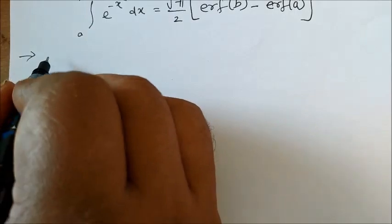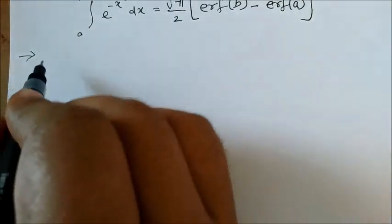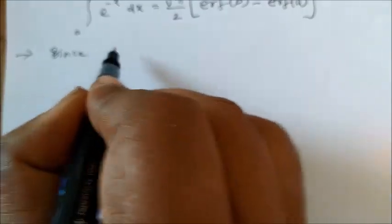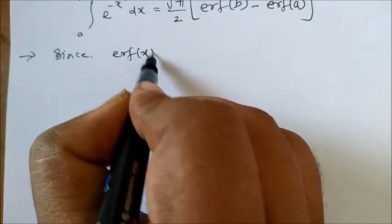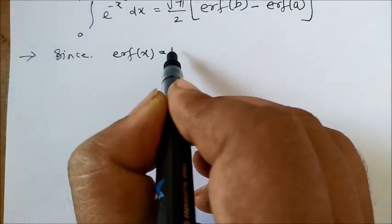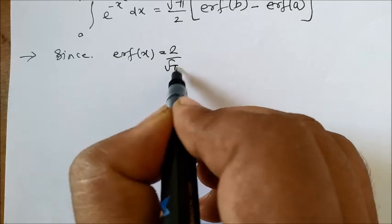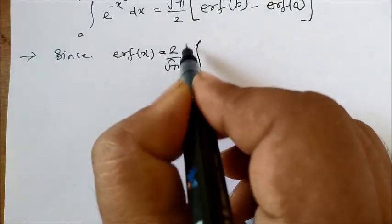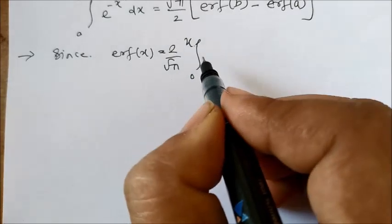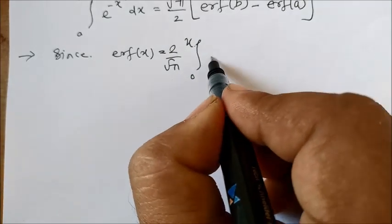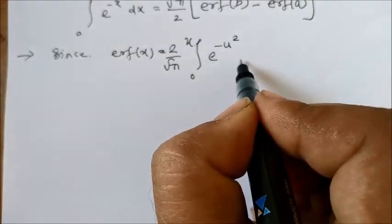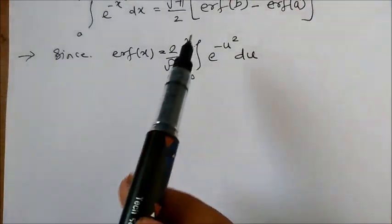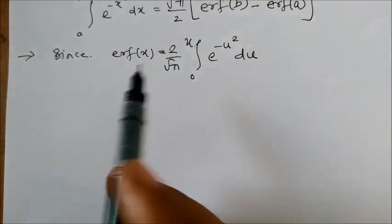First of all, let me write down the definition of the error function. Since erf(x) is defined as 2 by root pi, integral 0 to x, e to the power minus u squared du.